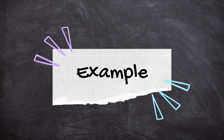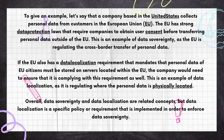To give an example, let's say a company based in the United States collects personal data from customers in the European Union. The EU has a strong data protection law — GDPR — that requires companies to obtain user consent before transferring personal data outside of the EU. This is an example of data sovereignty, as the EU is regulating the cross-border transfer of personal data.